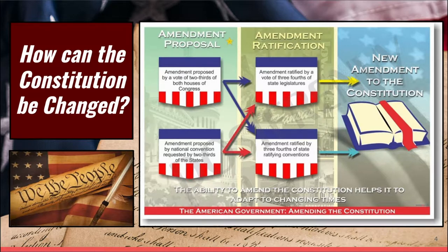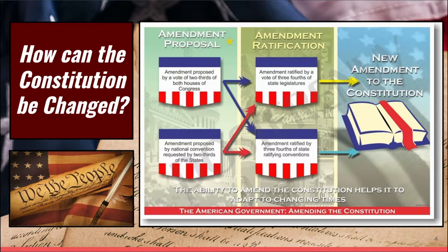The last time we tried to make a big change to the Constitution was called the Equal Rights Amendment, and it failed by one state — Iowa — in 1980. It would have been an amendment stating that men and women are equal under the Constitution, must receive the same pay for the same work, and there cannot be discrimination based on gender. The last time we actually amended the Constitution was in the early 1990s with the 27th Amendment, which said Congress could not approve a pay raise in the first year after an election.